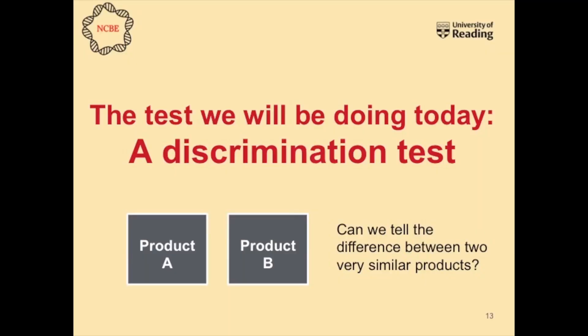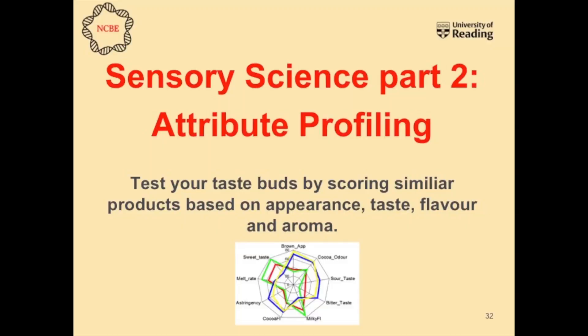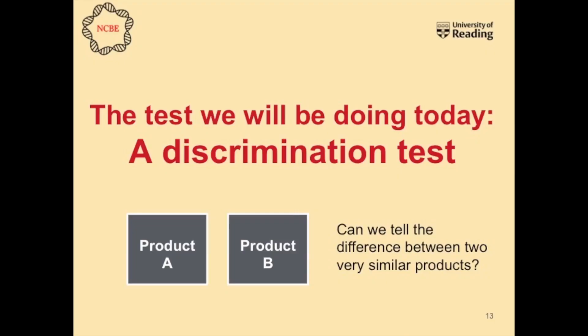Time for you all to be transformed into sensory scientists — the moment you've all been waiting for! Today we're going to be doing a certain type of sensory science test called a discrimination test, also called a difference test. It's not the only sensory science test you can do, but today this is what we're focusing on. If you tune into further videos, you can have a go at some other tests — the next ones are called attribute profiling, where you describe food depending on what you can taste, what flavours you have, what aroma you're getting, dividing up the product into different attributes such as creamy or salty. But today we're doing the discrimination test to see whether you can tell the difference between two very similar food products.